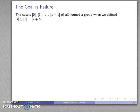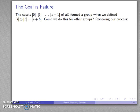To recap, our cosets 0, 1, and so on up to n minus 1 of nZ, they do actually form a group when we define the sum of the cosets by the sum of the coset representatives. The question at hand is can we do this for other groups?